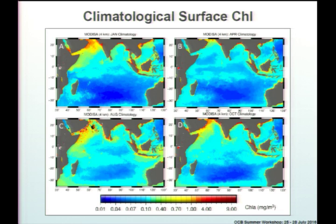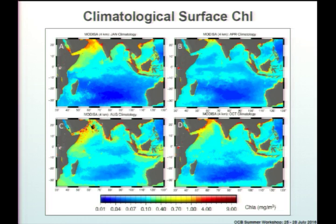Here is the biological response in terms of surface chlorophyll from a MODIS climatology. This is January and this is August — winter and summer monsoon. You've got high production responses, a lingering upwelling response in April, which is the fall intermonsoon. In the spring intermonsoon things really quiet down. You can also see this STTR feature that Mike touched on — a sort of relatively high chlorophyll feature in this southern basin.